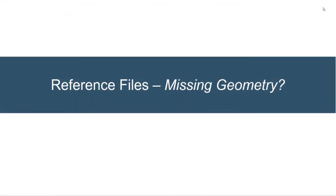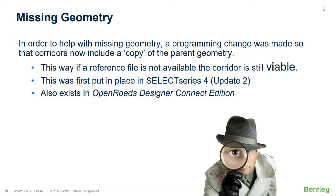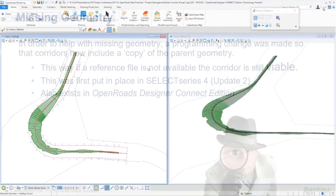That works great for terrains, and it works great for other things like super elevation. But what about missing geometry, which is a scenario we know users find themselves in from time to time? In order to help with missing geometry, we made a programming change back in Select Series 4 Update 2 so that corridors now include a copy of the parent geometry. Because we were seeing a lot of users delete or drop their geometry, leaving their corridors orphaned. So now, as you're working, we keep a backup copy of the geometry in the file so that the corridor is still viable. That was first put in place in Select Series 4 Update 2, and it also exists in the OpenRoads Designer Connect Edition.